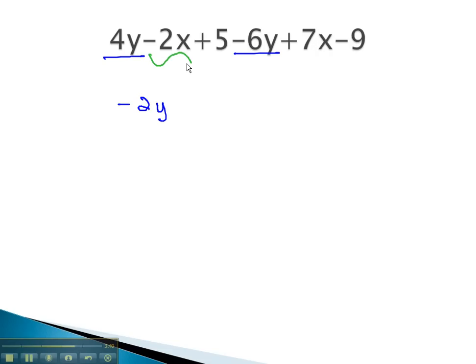Here, we have a -2x. The -2x can be combined with the like term, 7x. -2 plus 7 is positive 5x.